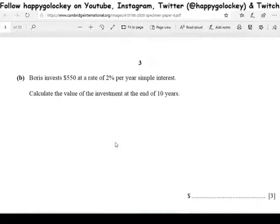The question is as follows. Boris invests $550 at a rate of 2% per year simple interest. Calculate the value of the investment at the end of 10 years. Press pause, have a go at it, and then we'll be back with the work solutions in 5, 4, 3, 2, 1.